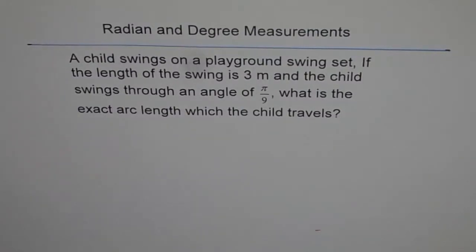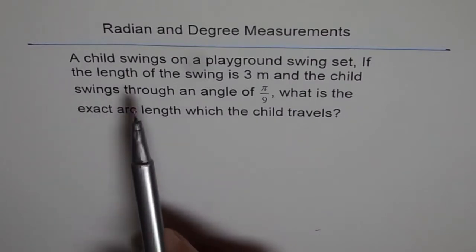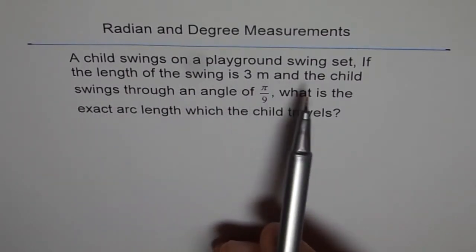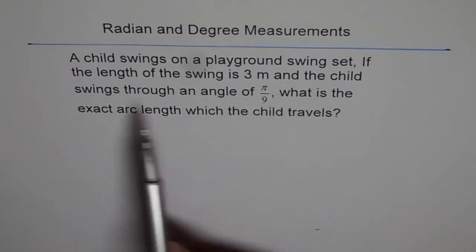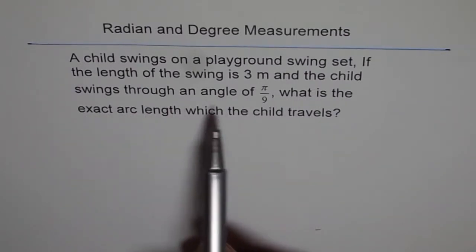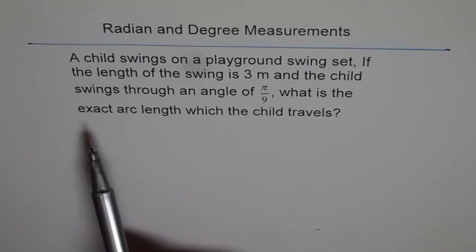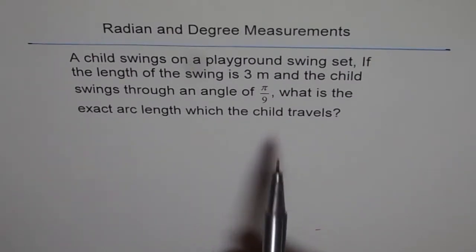Here is another application problem on radian and degree measurements. A child swings on a playground swing set. If the length of the swing is 3 meters and the child swings through an angle of π by 9, what is the exact arc length which the child travels?